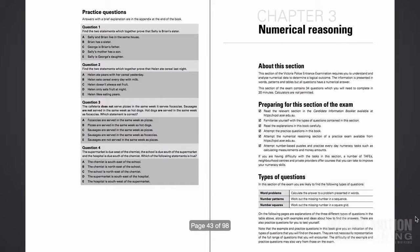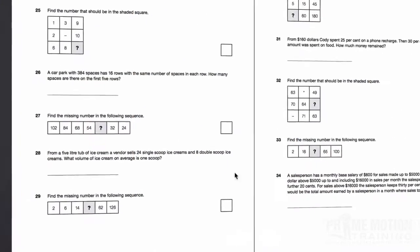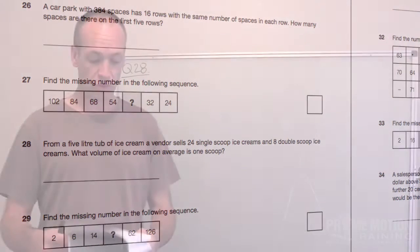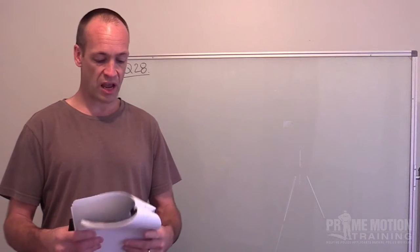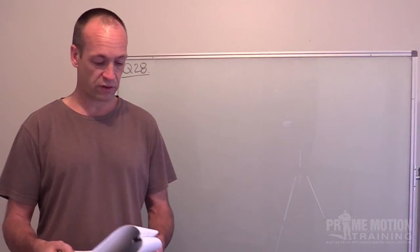So going back to the practice reasoning tests, one of the numerical reasoning practice tests has a question in relation to working out how many scoops of ice cream there might be out of a particular tub of ice cream and it is actually question number 28 in this practice exam and I want to take you through the workings out for this particular question. It was a request that I had from one of my members so I thought I would share a video with everyone so we can all benefit from it.